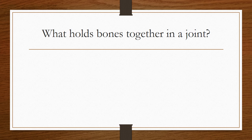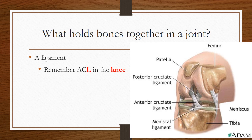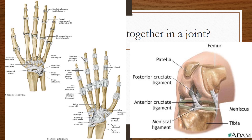Tendons connect muscle to bone, but what connects bone to bone? For example, what keeps the bottom part of your leg from disconnecting from the top part at the knee joint? A ligament. Have you ever heard of people tearing their ACL in their knee? The L in that abbreviation stands for ligament. Take a moment to look at the ligaments that hold this knee joint together — and look how God designed your hand. Look at all the ligaments in every joint. Could that possibly have just evolved? I don't think so.